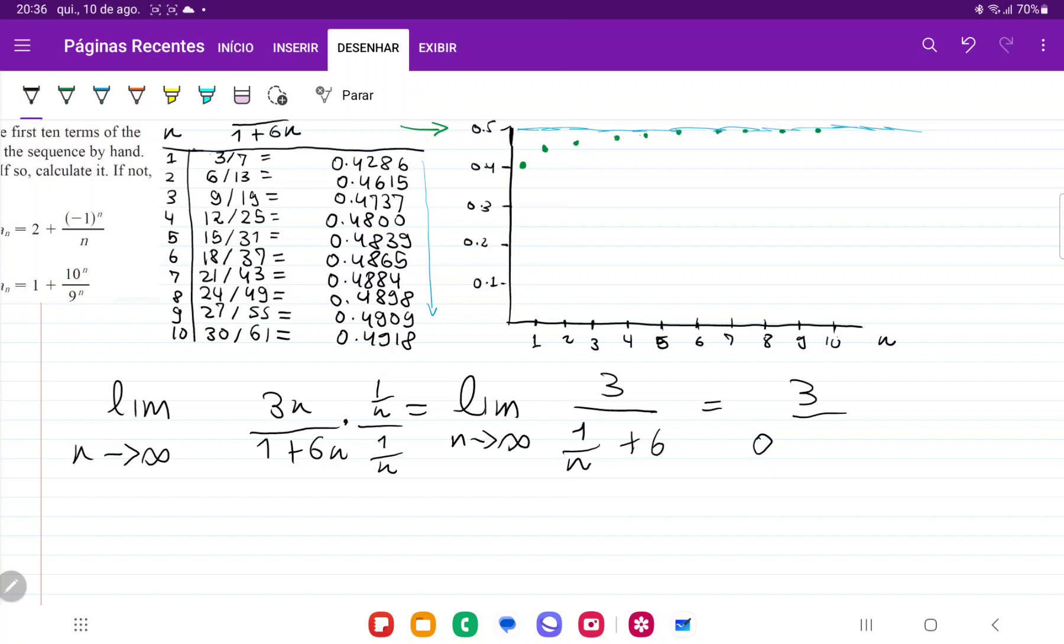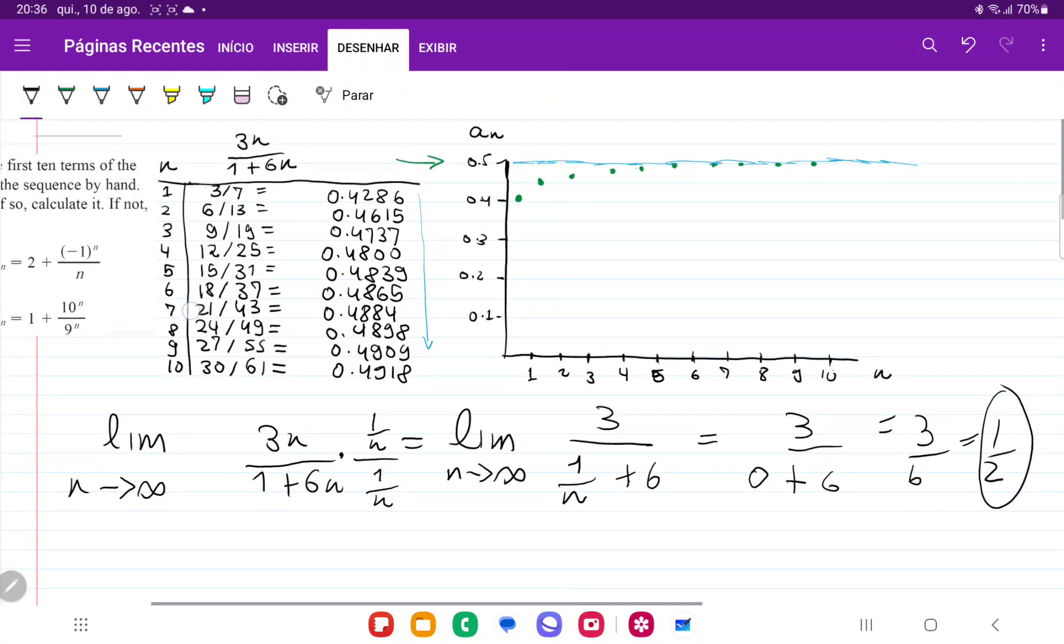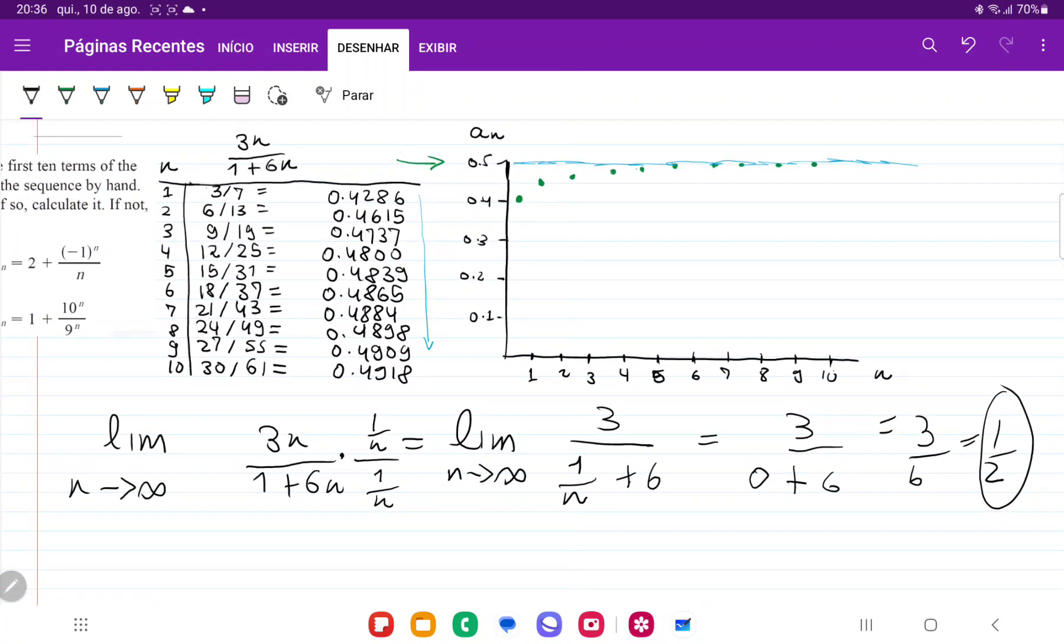Because 1 divided by, say, a billion, that's going to be really, really close to 0, plus, well, the limit of 6 is just 6. And so this is 3 over 6, which is 1 half. So as we suspected, the limit of this sequence here, as n gets larger, the value gets closer and closer to 1 half.